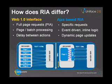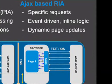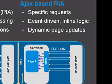So how does RIA differ? A Web 1.0 interface is based around full-page requests, also sometimes referred to as PIA, as in Paged Internet Application. This is based around batch processing and leads to delays between actions. With an AJAX-based application, you have specific requests — rather than sending the whole page, you just send an action asking for a particular piece of information. It is event-driven and allows you to write in-line logic. Because it is asynchronous, the responses can be combined with the power of JavaScript and cascading stylesheets to do dynamic page updates, meaning you no longer have to submit the whole page and wait for it to come back. This yields a much more usable application.